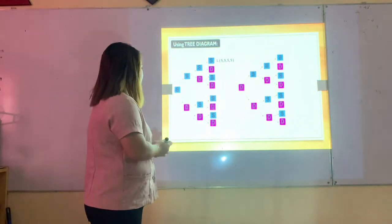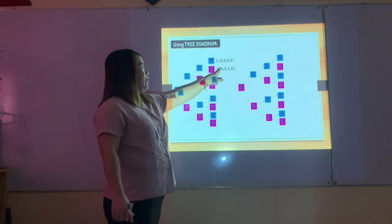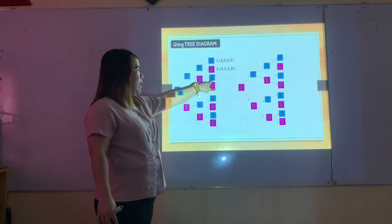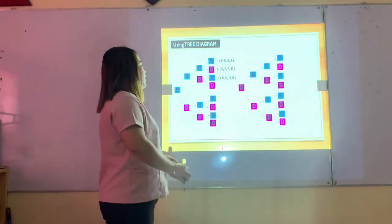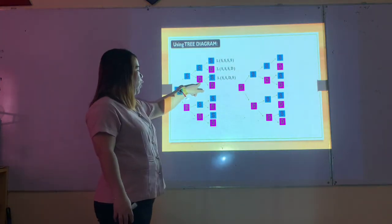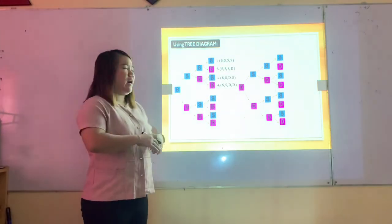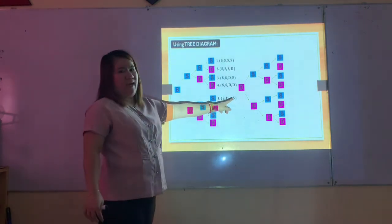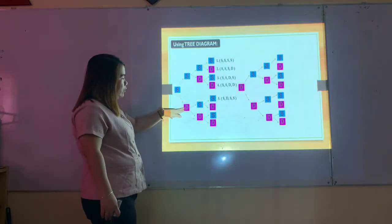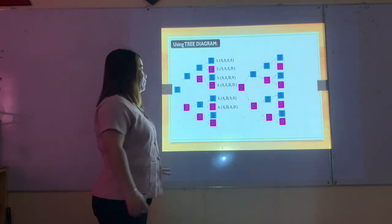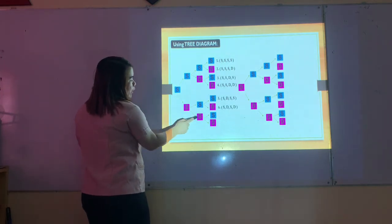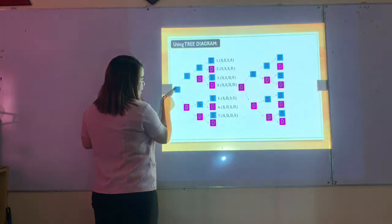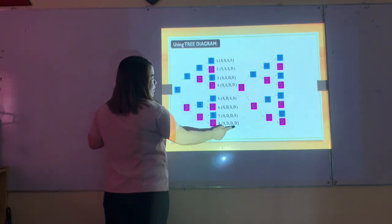Second arrangement: son-son-son-daughter (SSSD). Third: son-son-daughter-son (SSDS). Fourth: son-son-daughter-daughter (SSDD). Fifth: son-daughter-son-son (SDSS). Sixth: son-daughter-son-daughter (SDSD). Seventh: son-daughter-daughter-son (SDDS). Eighth: son-daughter-daughter-daughter (SDDD).